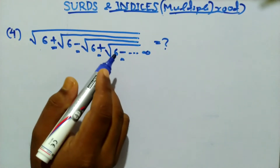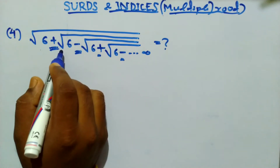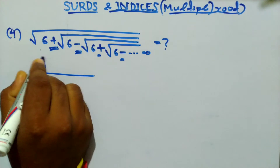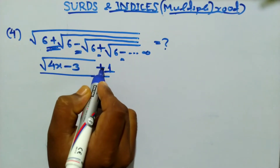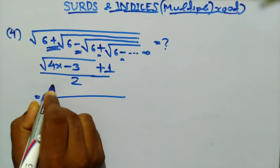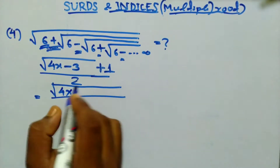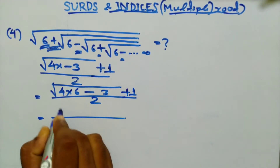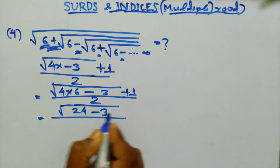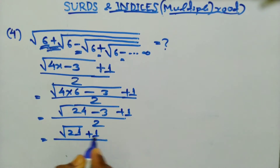Next question: here you can see two signs are repeated one by one — the first sign is positive and the second sign is negative. In this type of question, apply the formula for when the first sign is positive: (√(4x - 3) + 1) / 2. Here x is 6 because all the numbers are the same. So we get (√(24 - 3) + 1) / 2 = (√21 + 1) / 2. This is the answer.